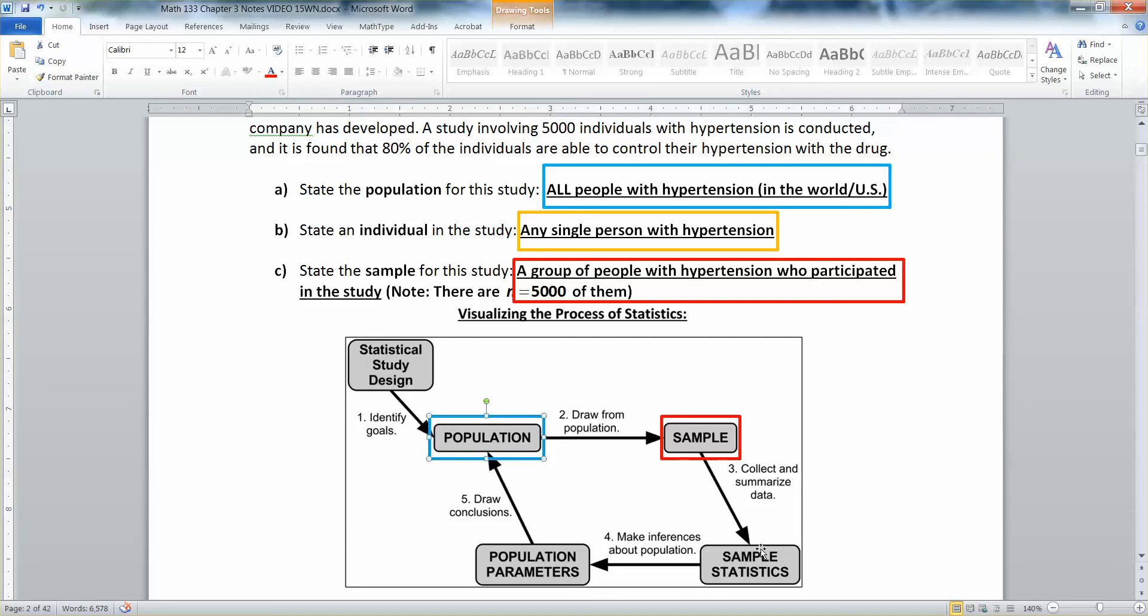So you're taking that lab data, which is the sample statistics, and you're inferring about how the population of all beakers like you have, or all electron spectrum microscopes are going to work like yours does, et cetera. And that is the process of statistics.